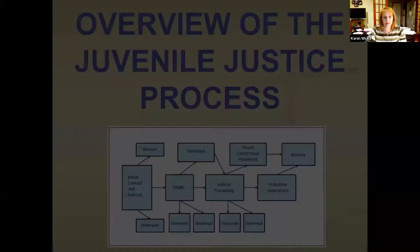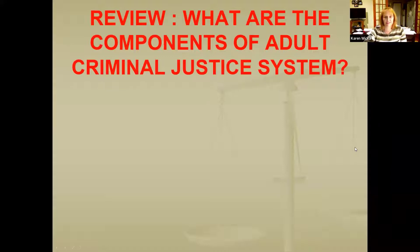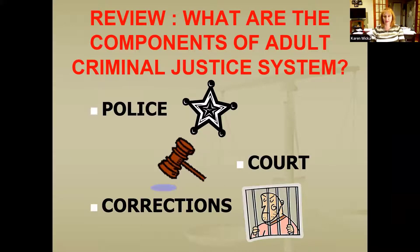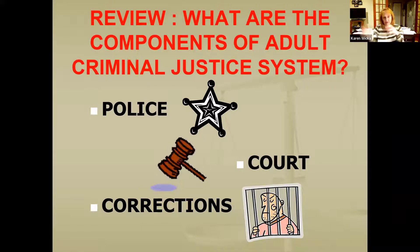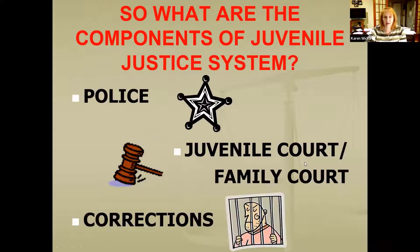So we're just going to start talking about the process. To get us thinking about it, I want you to think about what are the three main parts of the adult criminal justice system. If you had to identify the three main parts of the criminal justice system, what would those be? Hopefully you said police, courts, and corrections.